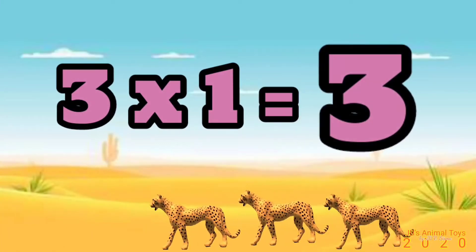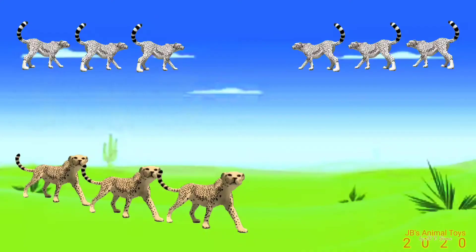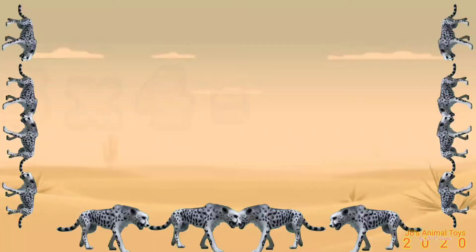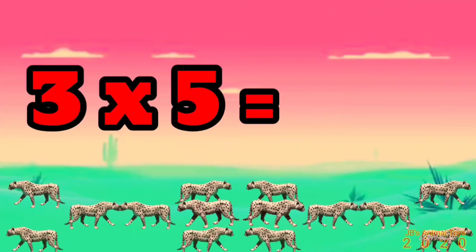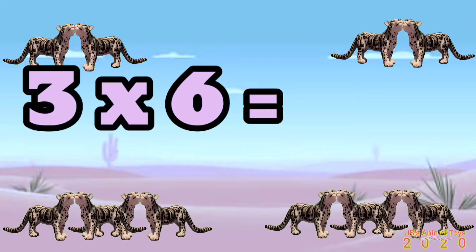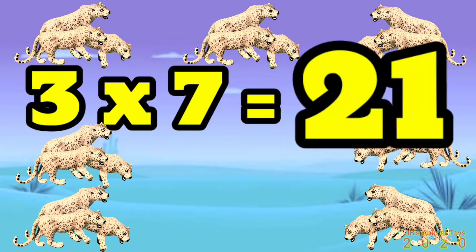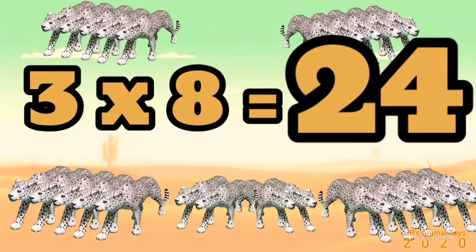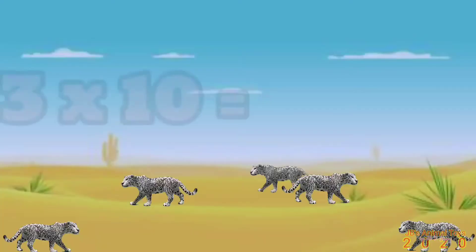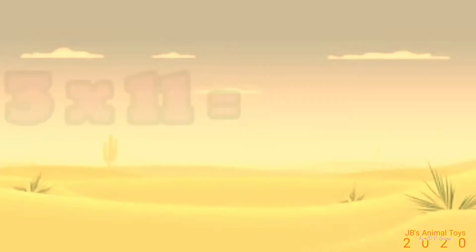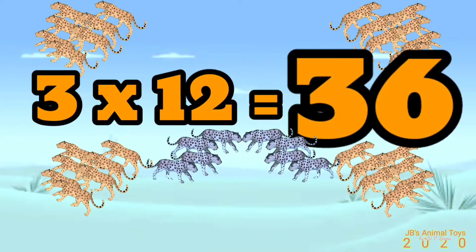3 times 1 is 3. 3 times 2 is 6. 3 times 3 is 9. 3 times 4 is 12. 3 times 5 is 15. 3 times 6 is 18. 3 times 7 is 21. 3 times 8 is 24. 3 times 9 is 27. 3 times 10 is 30. 3 times 11 is 33. 3 times 12 is 36.